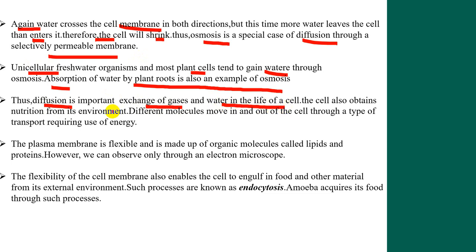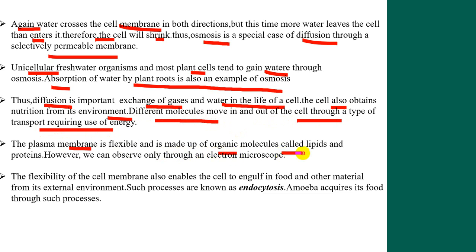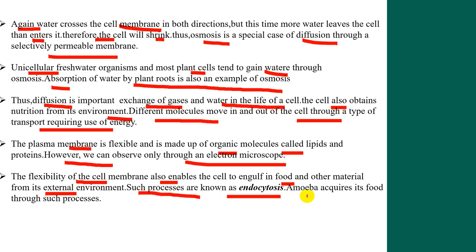Thus, diffusion is important for the exchange of gases and water in the life of a cell. The cell also obtains nutrition from its environment. Different molecules move in and out of the cell through a type of transport requiring the use of energy. The plasma membrane is flexible and is made up of organic molecules called lipids and proteins, observable only through an electron microscope.